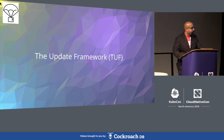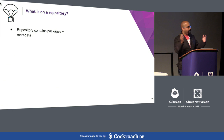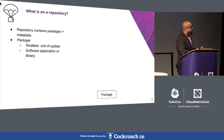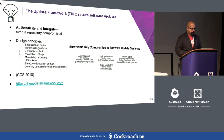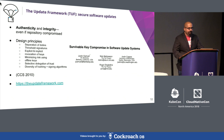Let me quickly dispatch some background. A repository is a server that contains both packages and metadata. A package is the smallest unit of update, which could be either a software library or an application. The repository also contains metadata, such as cryptographic hashes and file sizes, about packages or other metadata files. We're now ready to see how TUF uses a few simple yet powerful design principles to ensure repositories can severely limit the impact of a key compromise and recover from them.